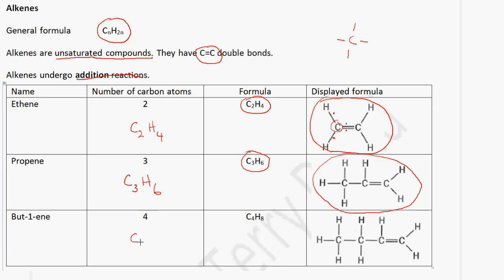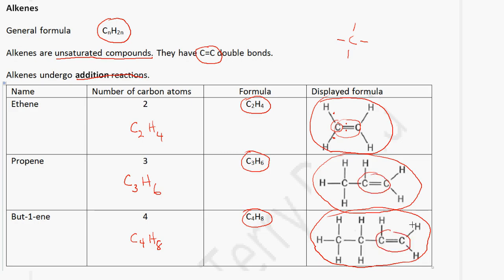If you notice, we have a double bond — this is the double bond here. So if we are given a displayed formula, we can identify if it is an alkene or not by looking for the carbon to carbon double bond.